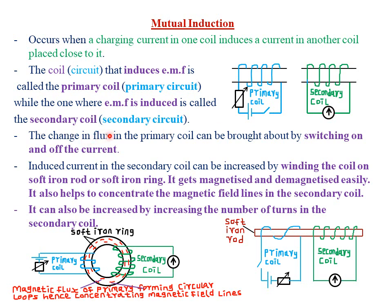The change in the flux in the primary coil can be brought about by switching on and off the circuit. If you want some EMF or current to be induced, you will simply be switching on and off this particular source of power. Remember, a conductor carrying current has a magnetic field around it — that is what we said under the topic in Form 2 called Magnetic Effect of an Electric Current. You can review that chapter under Form 2; we covered it in this channel.